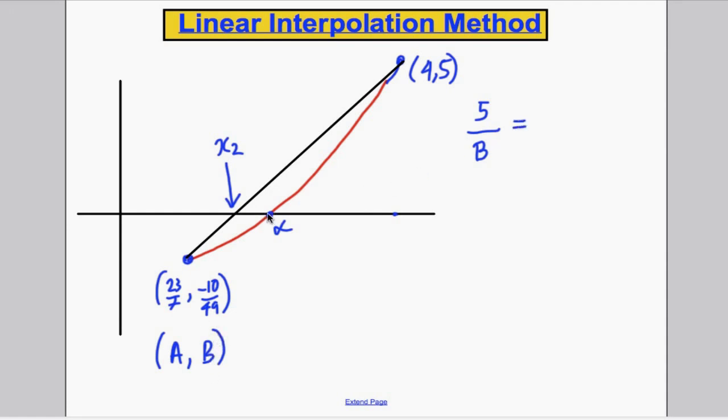It must be equal to the width of this triangle. Well, the width of this triangle must be 4 - x₂, divided by the width of this triangle here, which must be x₂ - 23/7. But again, don't use 23/7. Use the A value. So x₂ - A.